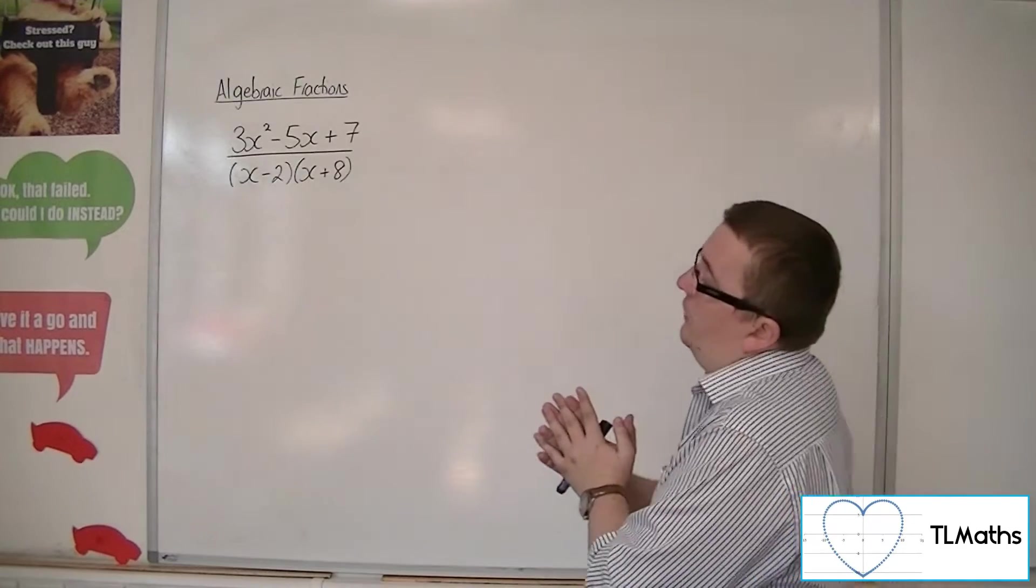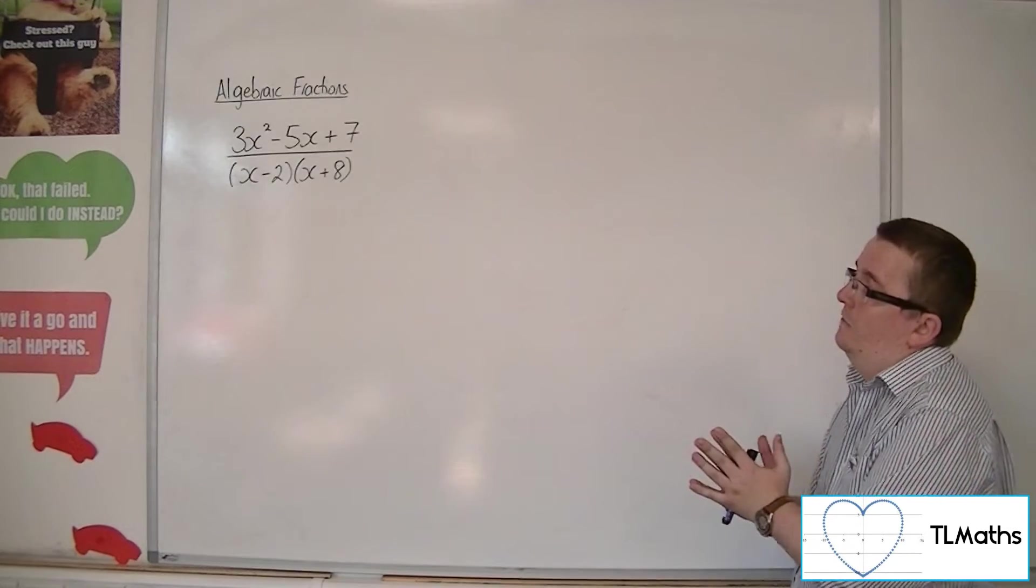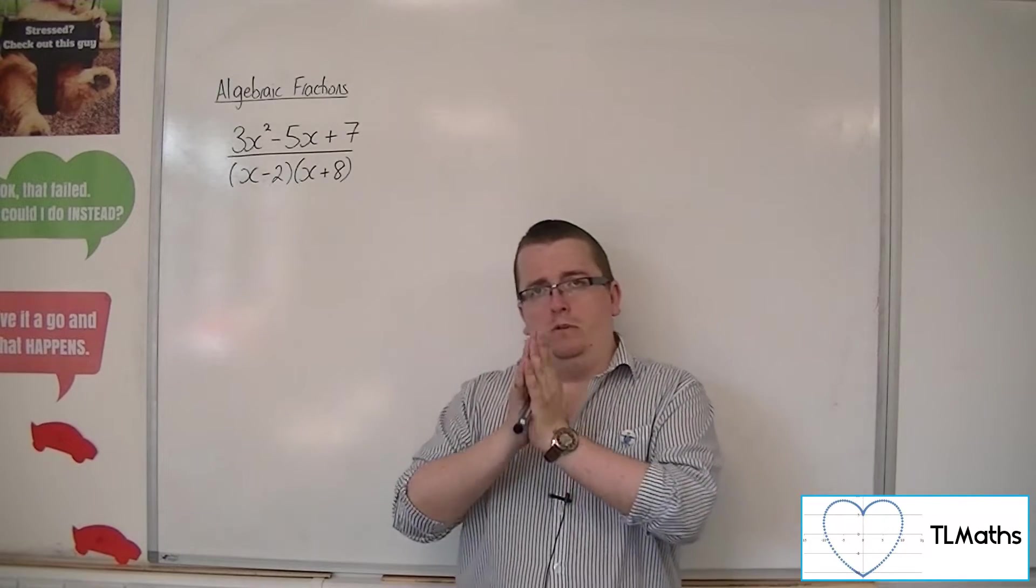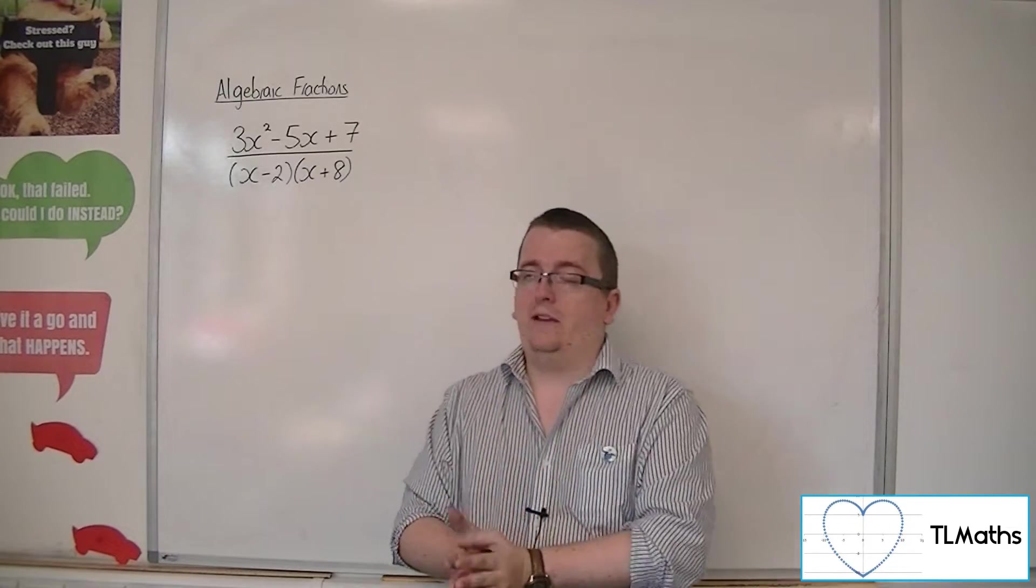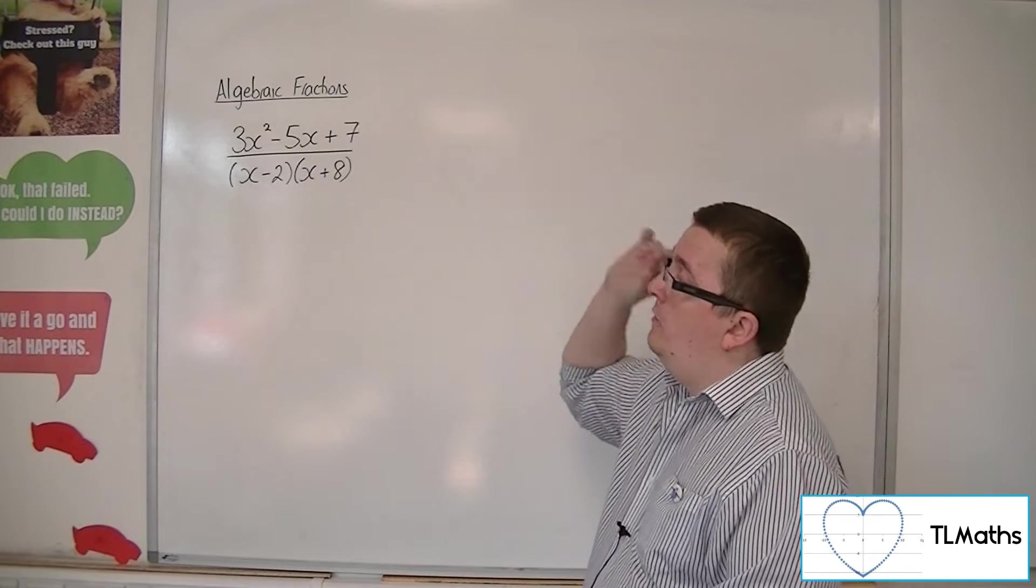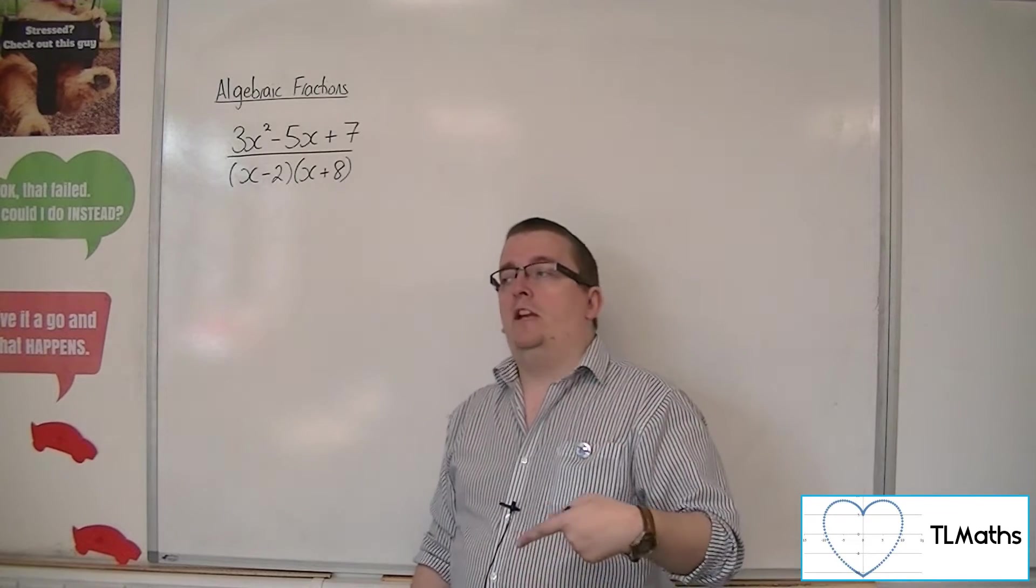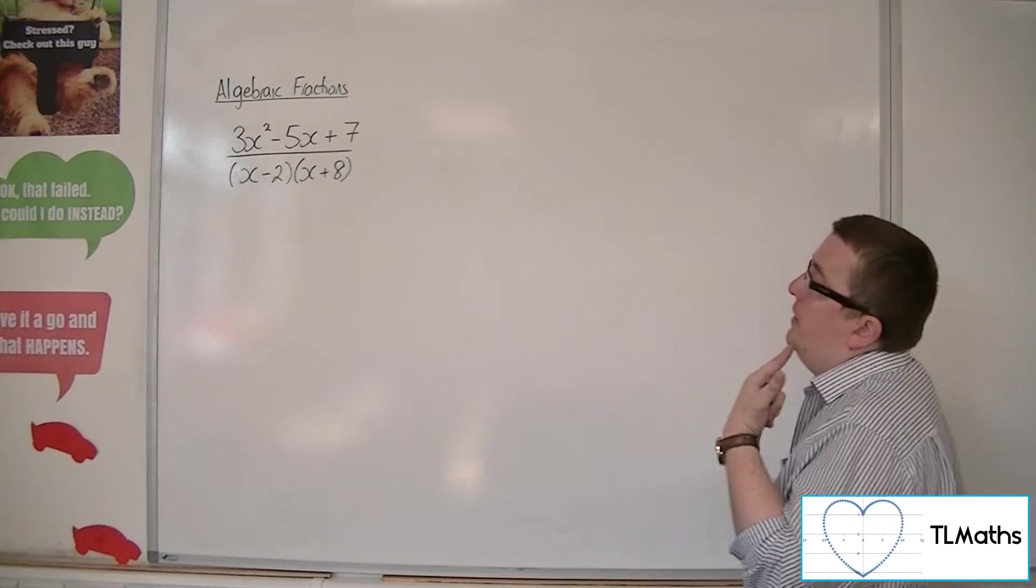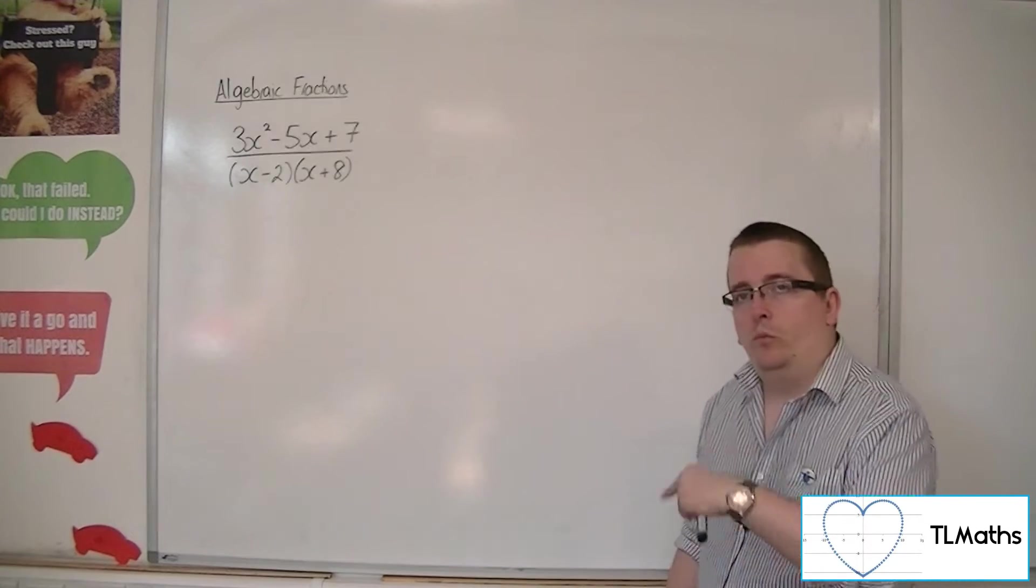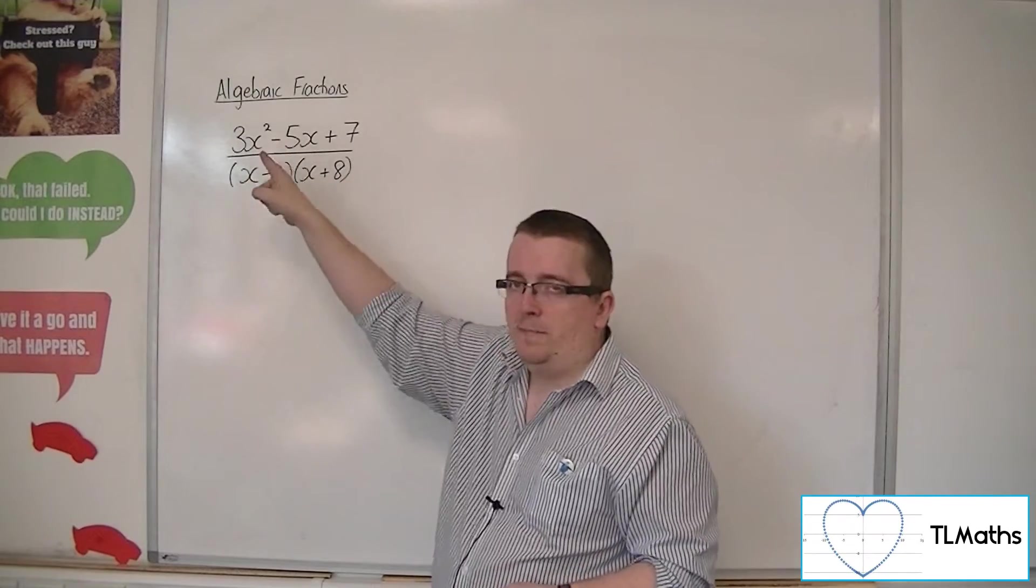This is an improper fraction because the numerator has the same power of x, the same largest power of x, as the denominator has. So we've got x squared in the denominator, we've got x squared in the numerator. It is improper because it has the same or higher power of x than what is in the denominator.